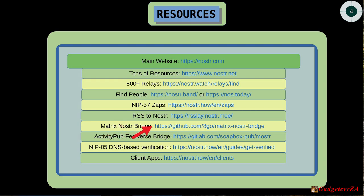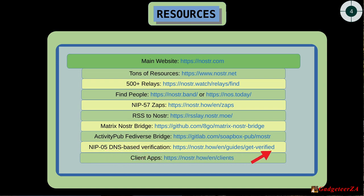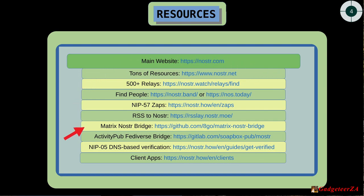There's also a Matrix network bridge, and the ActivityPub Fediverse bridge I mentioned — follow that relay and you'll be able to interact with the Fediverse. NIP-05 DNS-based verification lets you get a verified username; you do it yourself for about one dollar, that's all. Finally, there's a link to recommended clients for Android, iOS, Linux, Windows, macOS, and more.